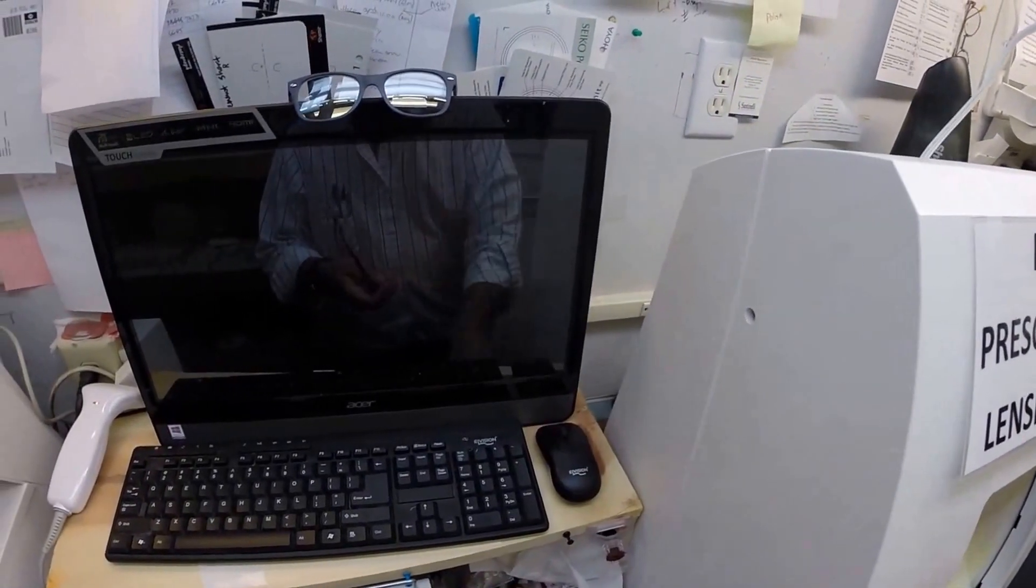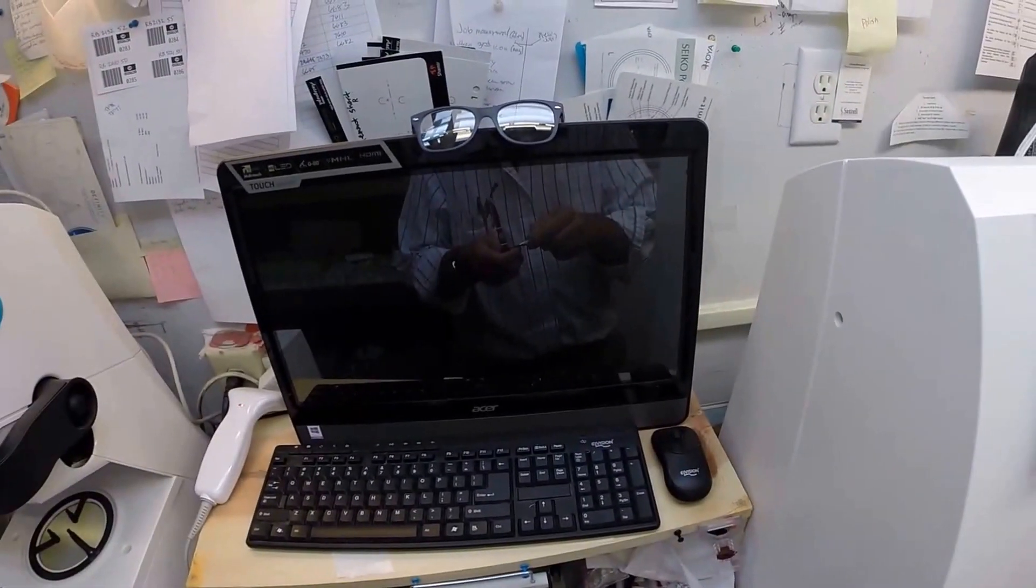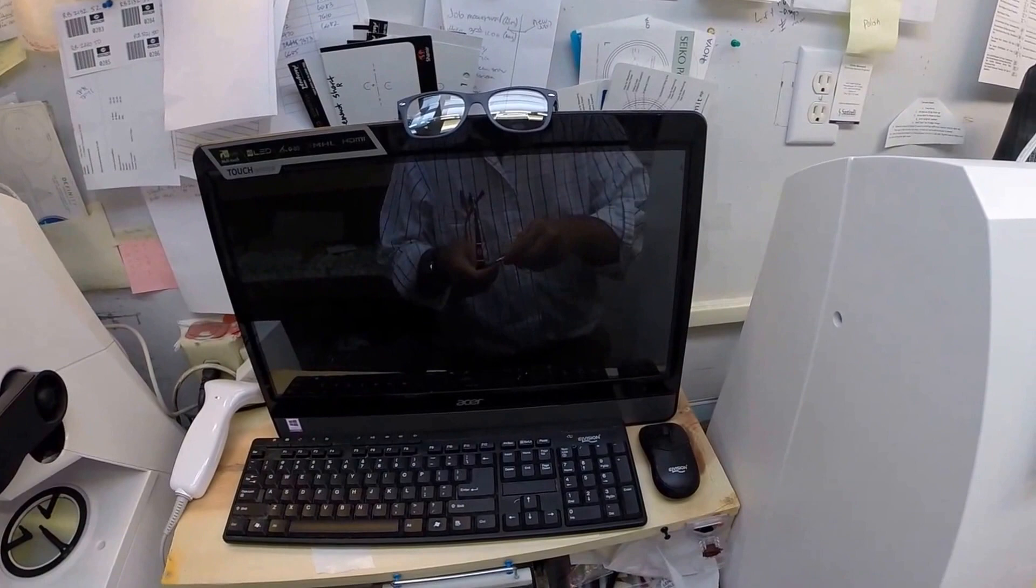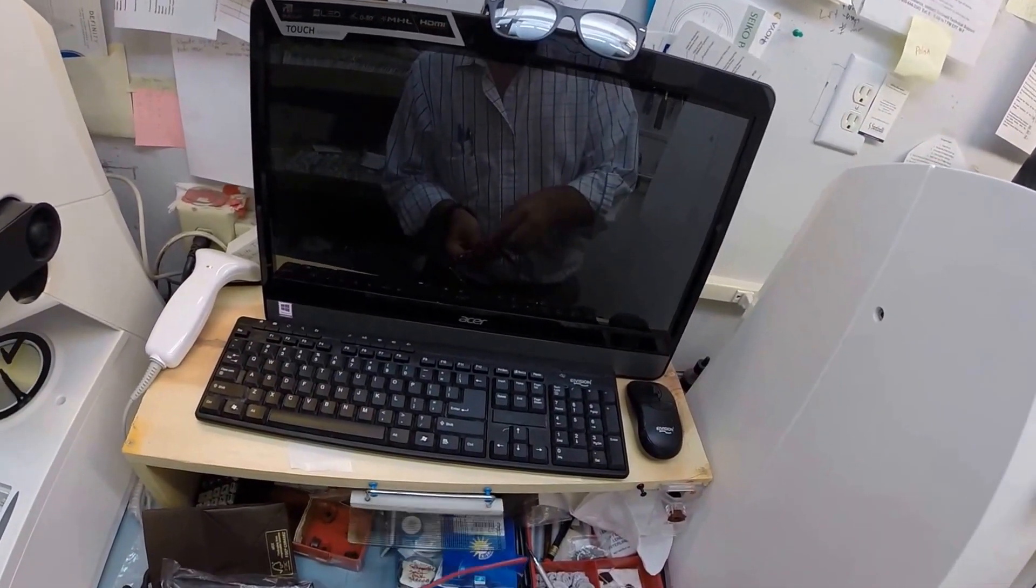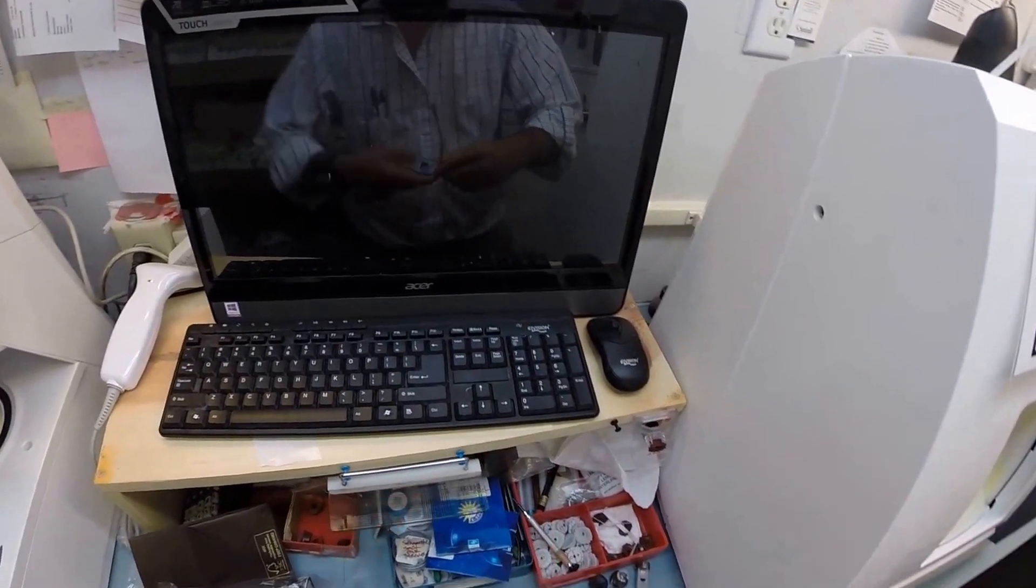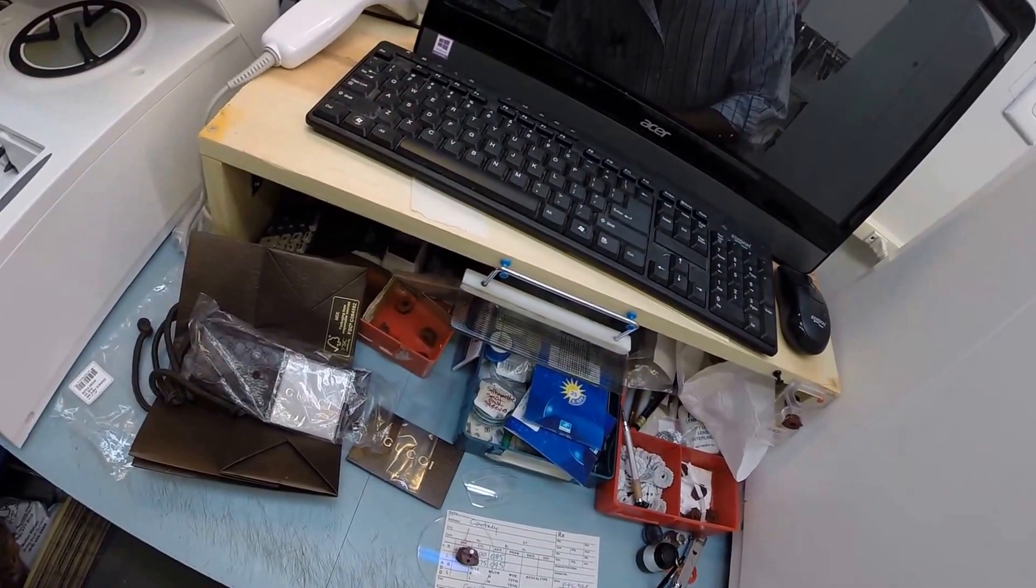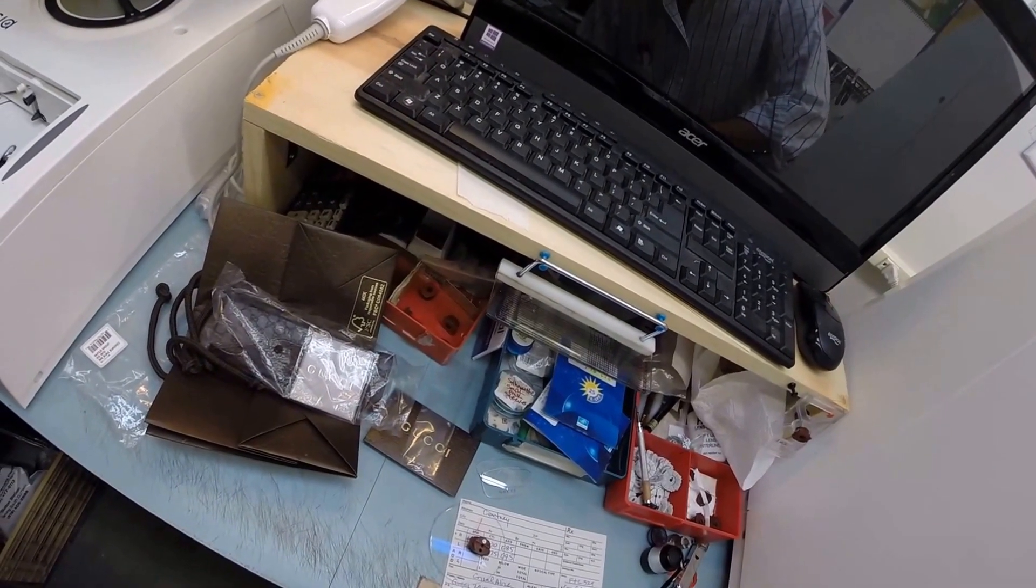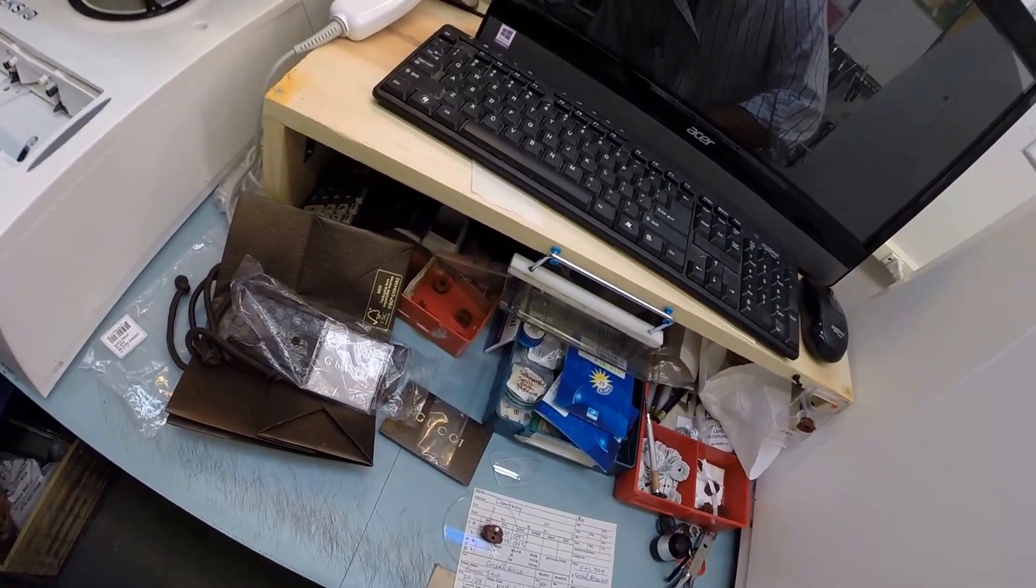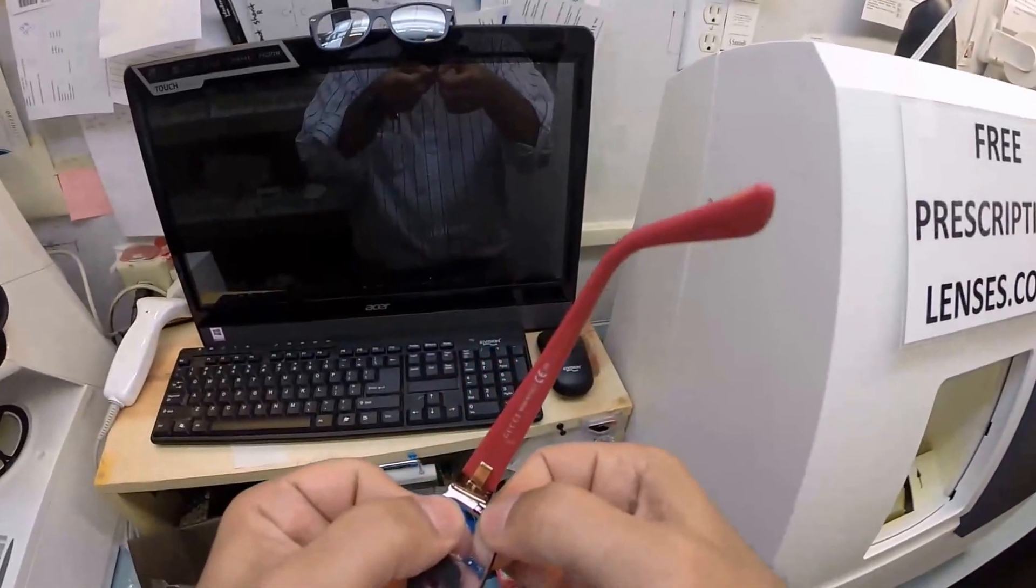I'm going to take my little Phillips head screwdriver, do the old lefty loosey, turn the frame around, tuck your lens in, and then a righty tighty. Hang on, hang on. I'm going to make sure everything is perfect. There we go. That's cinched up very nicely so we can go ahead and start cutting the left lens.